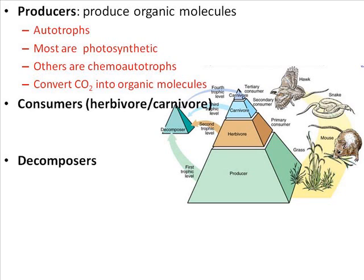Consumers are, by definition, heterotrophs. These organisms take the organic molecules made by producers and break them down to extract energy as ATP or to make other organic molecules. These can be broken down into photo-heterotrophs, which use sunlight to make ATP while breaking down organic molecules, or chemo-heterotrophs. We are chemo-heterotrophs: we take large organic molecules such as glucose, break them down to extract energy, and use them to make amino acids and nucleotides. Overall, consumers and heterotrophs release carbon dioxide back into the atmosphere, which is then used by the producers.